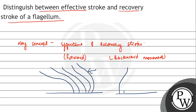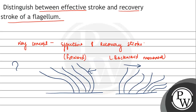Towards the other side, the angle will keep on increasing, and after a certain point it will look like that. So this movement towards the right hand side, when the flagella bends, is called the recovery stroke, and it helps the Euglena to move backward.